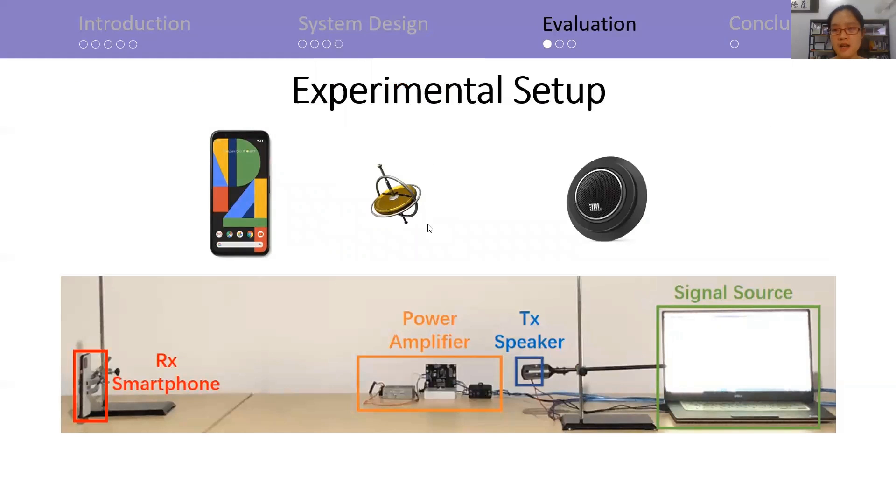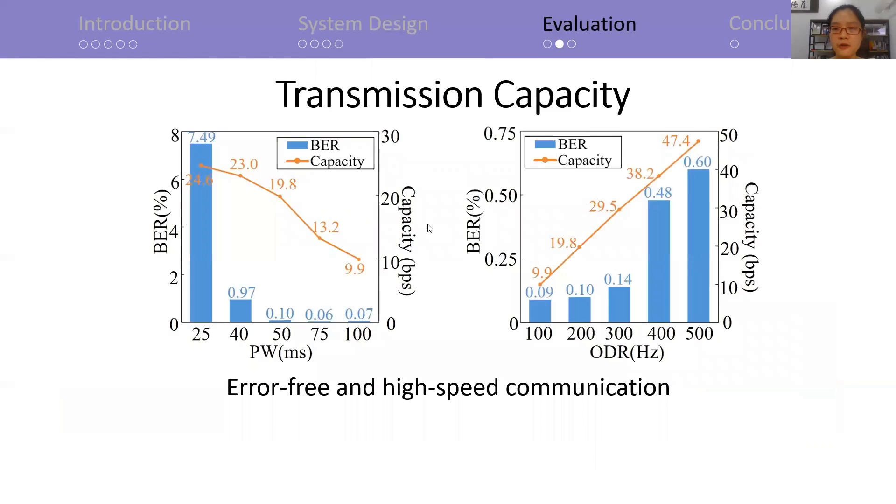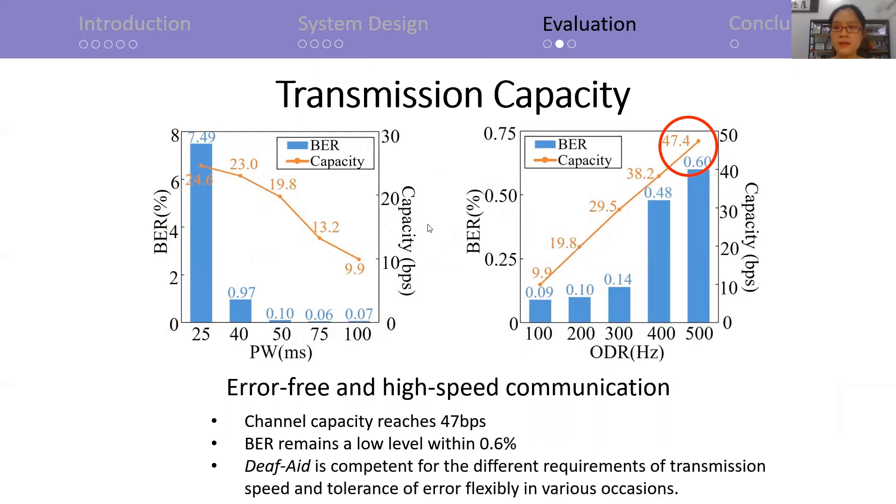To evaluate the performance, we build a prototype of Deaf-Aid using off-the-shelf gyroscope, speakers, and phones. For evaluating transmission capacity, we test on gyroscopes with different parameters. It can reach 47 BPS while BER remains at a low level within 0.6%. It is competent for different requirements of transmission speed and tolerance of error, flexible in various applications.